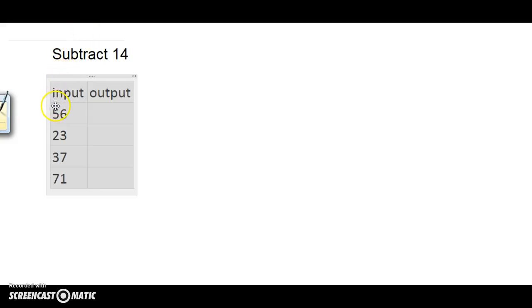Let's start with 56. So I'm going to go over here to the right. I'm going to go 56 minus 14. Start with the ones digit. 6 minus 4, 2. 5 minus 1, 42. Therefore, when my input is 56, my output is 42.